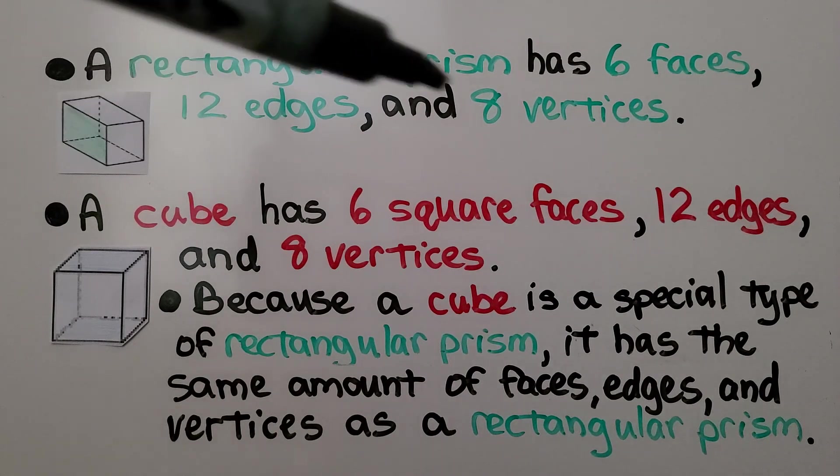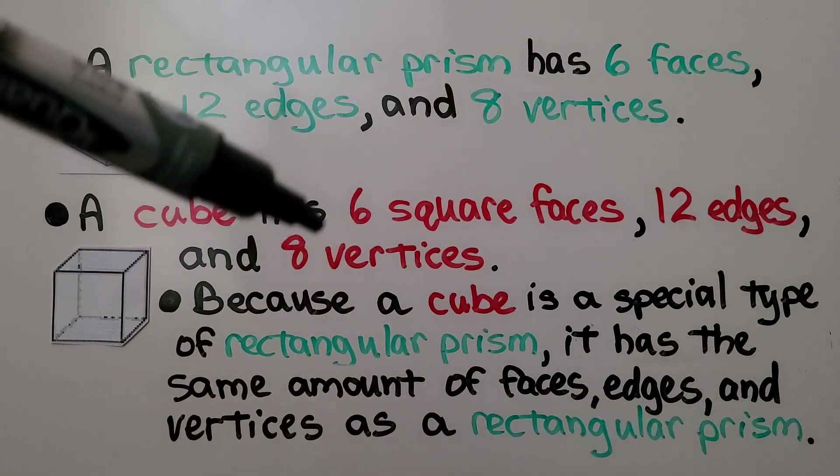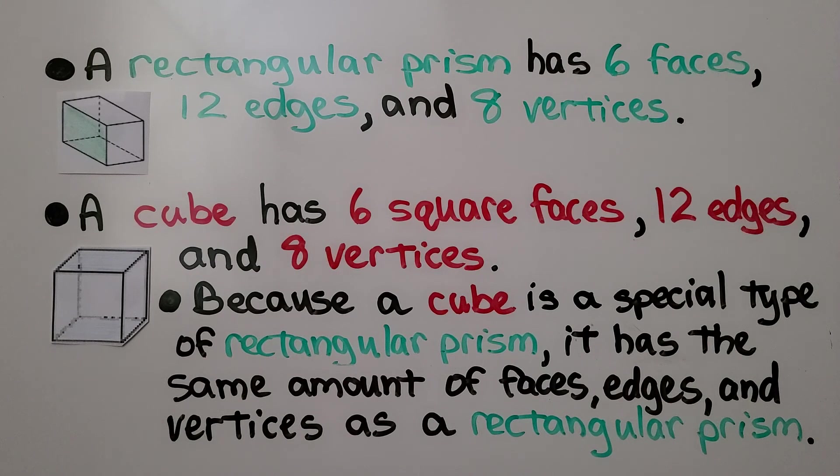Six, twelve, eight. Because a cube is a special type of rectangular prism, it has the same amount of faces, edges, and vertices as a rectangular prism.